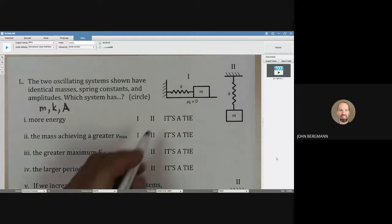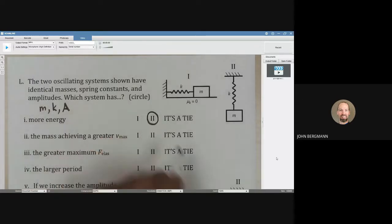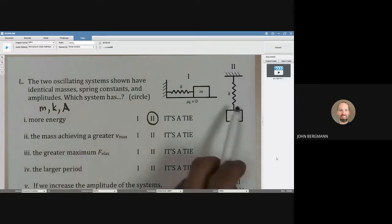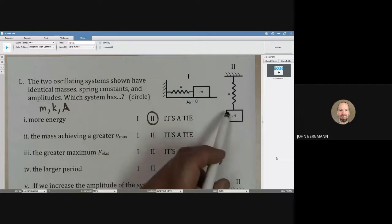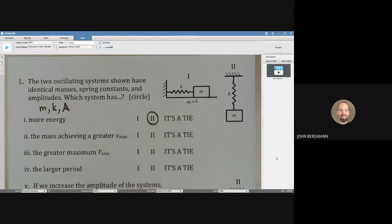Which system has more energy? That's going to be system 2, because for a given amplitude, this spring in number 2 is going to be stretched an additional amount because the equilibrium point for system 2 will have the spring already stretched some amount. So to make it reach the amplitude, it's going to have to be stretched yet more. There's going to be more energy in system number 2.